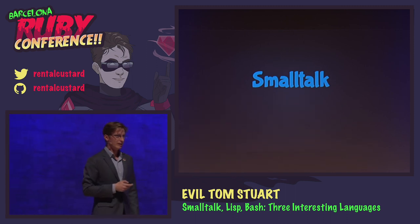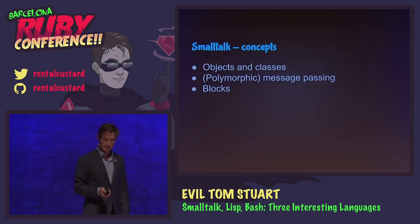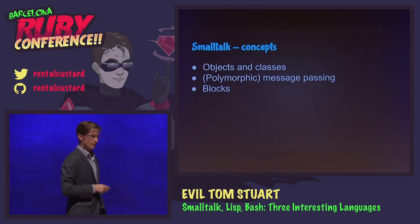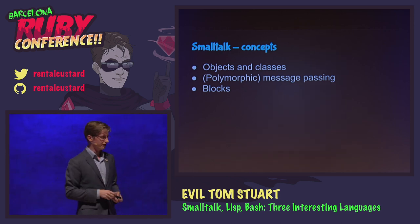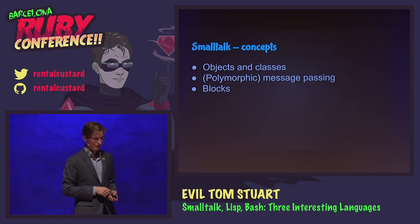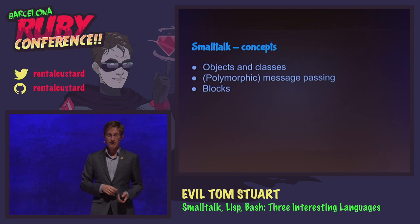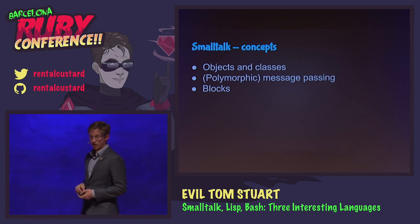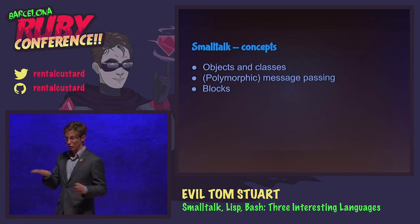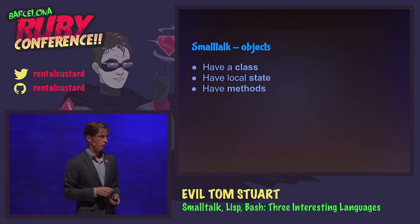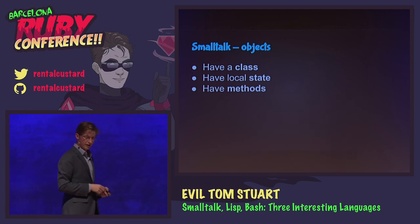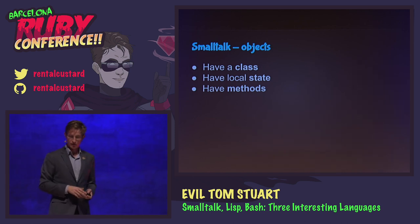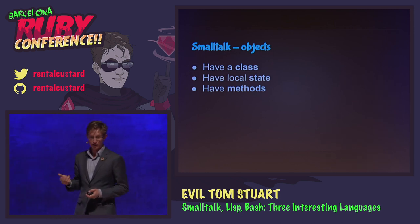So I would like to give you my reckons about Smalltalk for a few minutes. I reckon that in Smalltalk there are three main concepts: objects and classes, message passing to objects which can be polymorphic, and blocks. And I think that's basically all there is in Smalltalk. So what's an object in Smalltalk? Objects have a class, and every object has to have a class. Classes can have super classes, and the class defines where the object gets its behaviour — the methods are defined on the class.